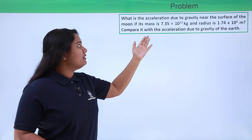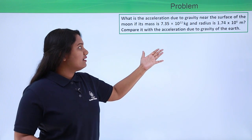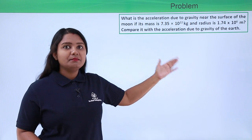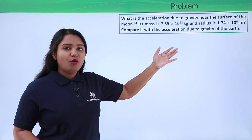If its mass is 7.35 × 10²² kg and radius is 1.74 × 10⁶ meters, compare it with the acceleration due to gravity of the earth.